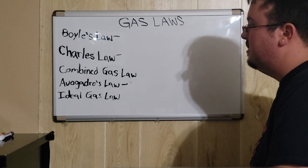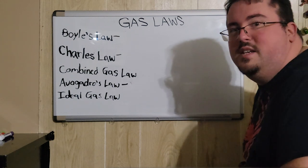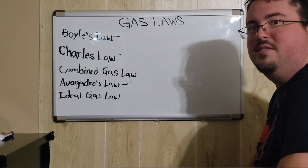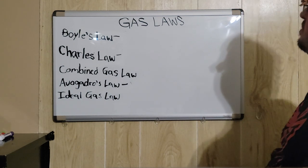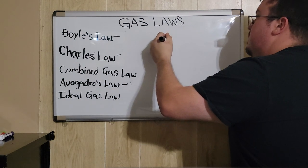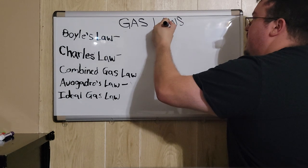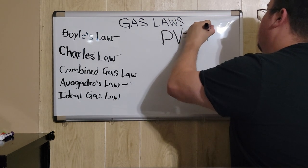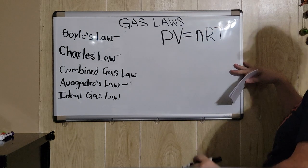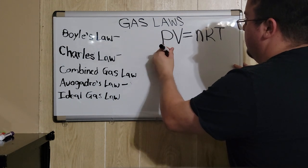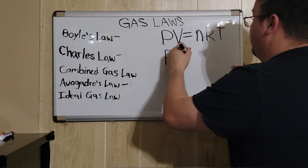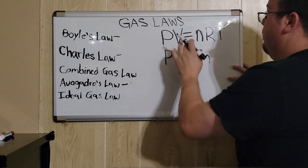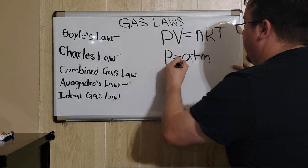Finally, we have ideal gas law. Ideal gas law actually deals with a few very specific units of measurement that have to be present, so you will have to do conversions. Ideal gas law is represented by PV equals N times R times T. P represents pressure, and your pressure has to be in ATM, atmospheric units. The volume must be in liters.